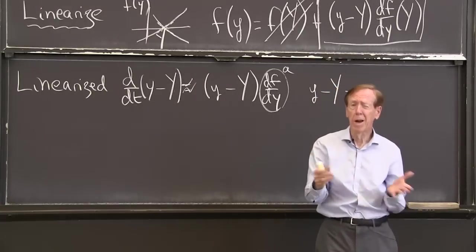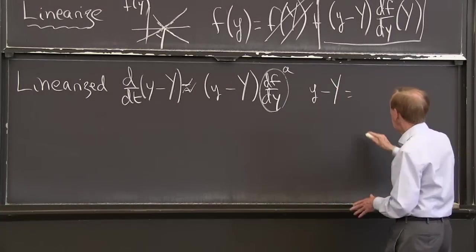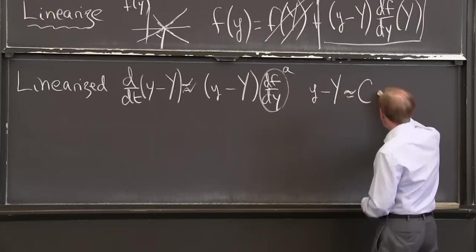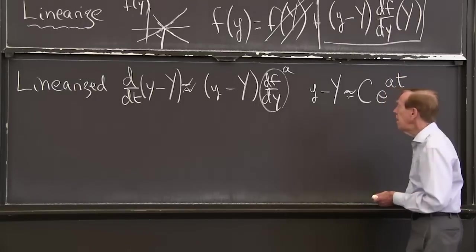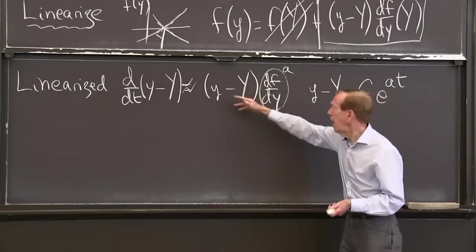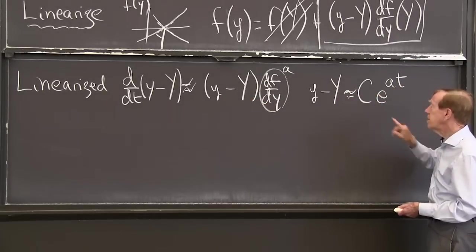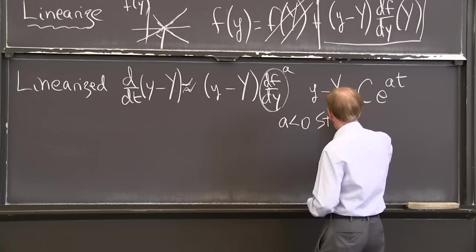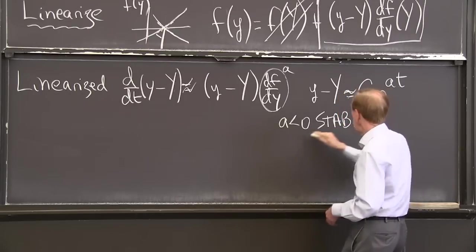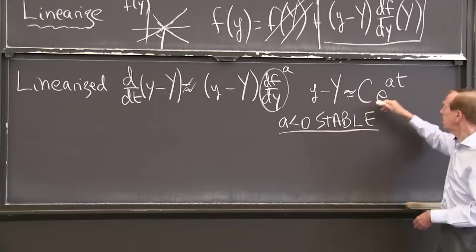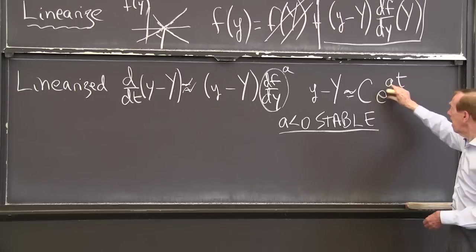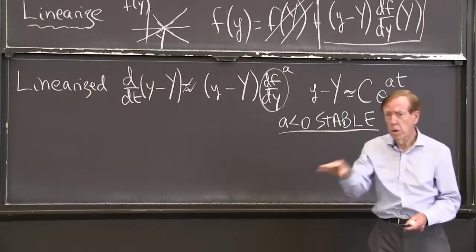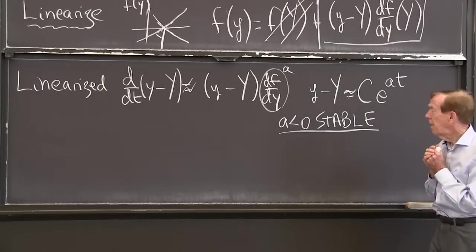It's just linear. The derivative is the thing itself times a. It's the pure model of steady growth or steady decay. Y minus little y is, let's say, some e to the at, right? When I have the coefficient in the linear equation ay, I see it in the exponential. So a less than zero is stable because a less than zero, that's negative, and the exponential drops to zero. And that tells me that y approaches capital Y. It goes to the critical point, to the steady state, and not away.